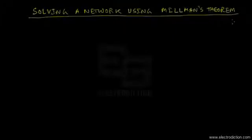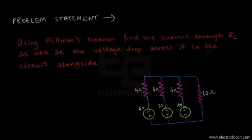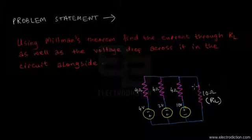Welcome once again to our tutorial on circuit theory. Today I'm going to show you how to solve a network using Millman's theorem. Our problem statement states: using Millman's theorem, find the current through RL — that's our load resistor — as well as the voltage drop across it in the circuit.